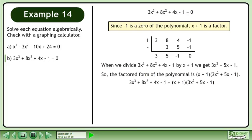So the factored form of the polynomial is x plus 1 times 3x squared plus 5x minus 1.